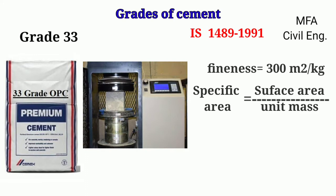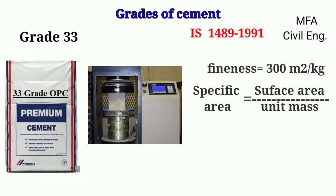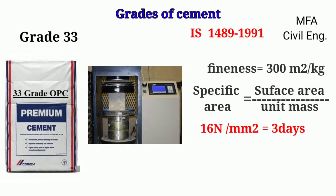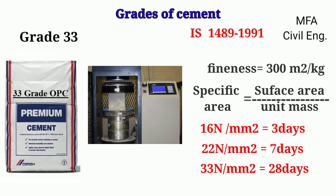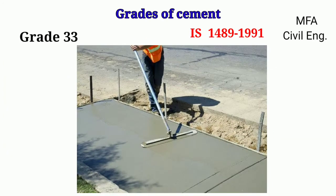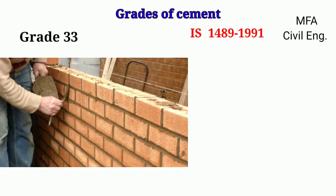The compressive strength of a cube made by the standard mortar should not be less than 16 N/mm² for three days, 22 N/mm² for seven days, and 33 N/mm² for 28 days of testing. This grade has a high workability and is mainly used for mortar in masonry work and for plastering work.